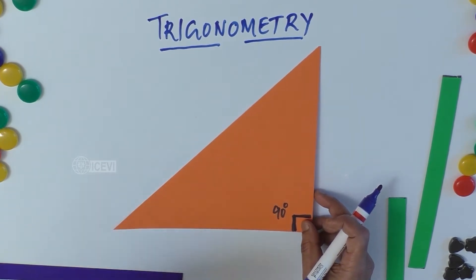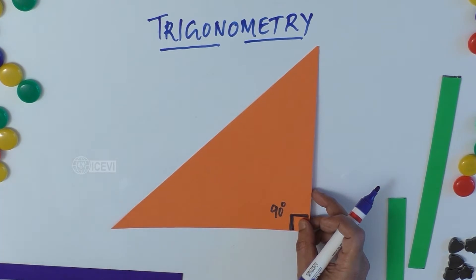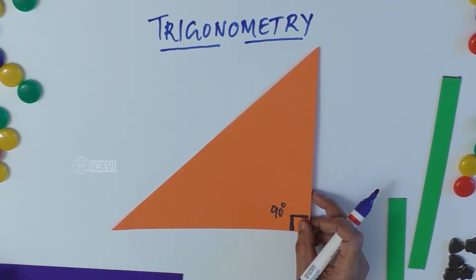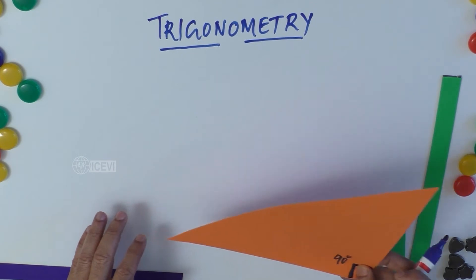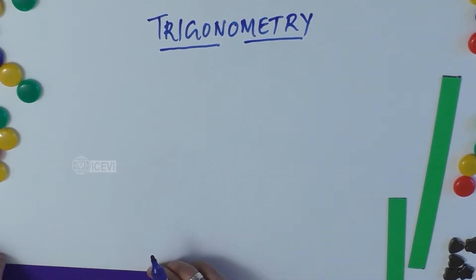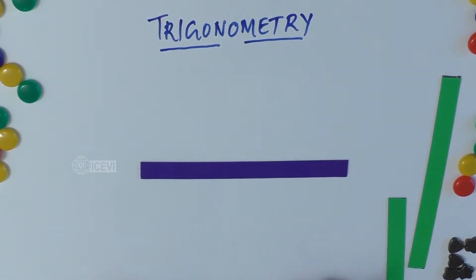Trigonometry is an integral part of life. When we need to find the height of a building or the height of a tree, when we look up or look down, trigonometry is involved. Engineering, oceanography, space research — any branch of science — trigonometry is an integral part of it.